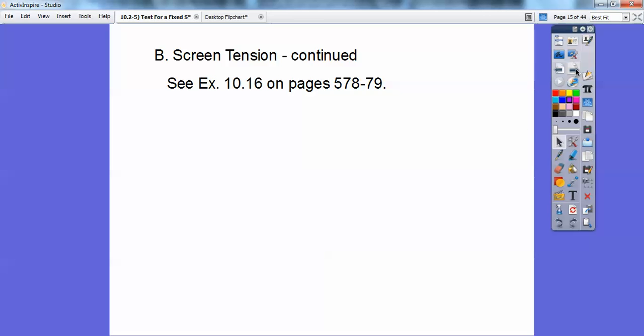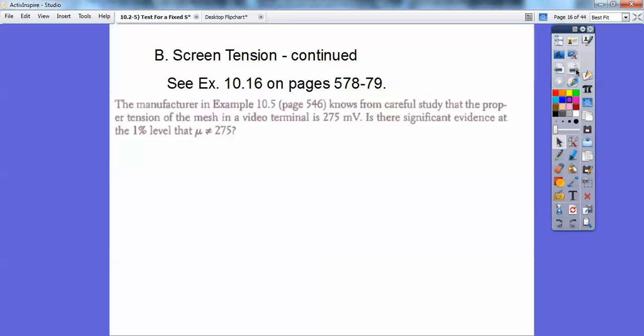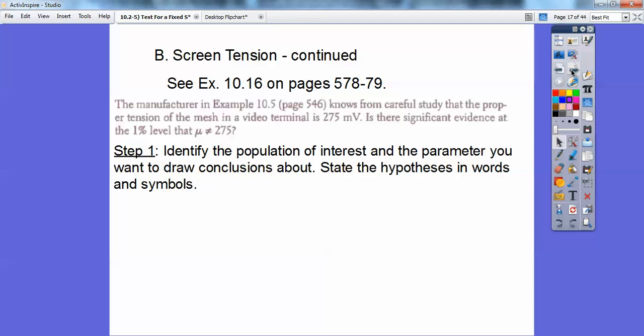So this is example 10.16 on pages 578 and 579. The manufacturer, in example 10.5 that we discussed earlier, knows from careful study that the proper tension of mesh in a video terminal is 275 millivolts. Is there significant evidence at the 1% level that the population μ doesn't equal the 275? So they just don't want it to equal, and then they did a sample, a simple random sample of 20 tensions that day, and I'll show you that in just a second.